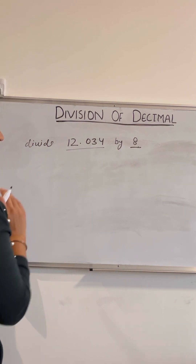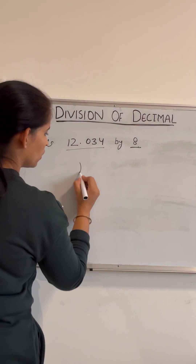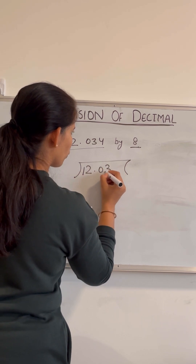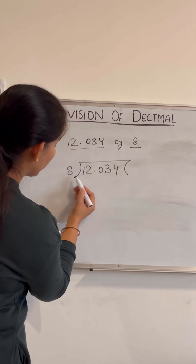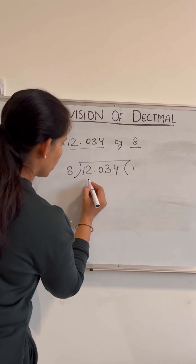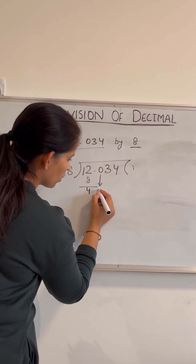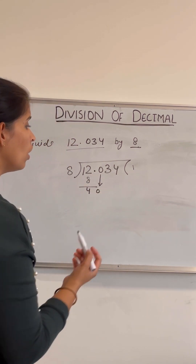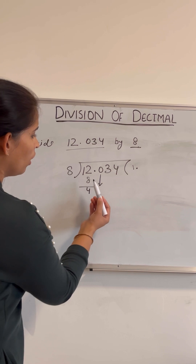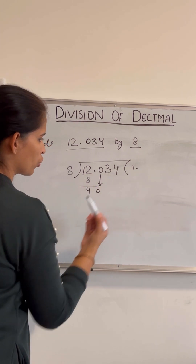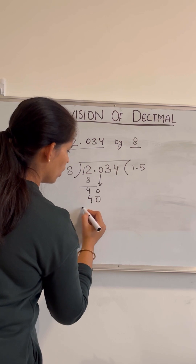We know that 12.034 is the dividend and 8 is the divisor. Starting the division: 1 is not divisible by 8, so we take 12. 8 ones are 8, so we get 1 with a remainder of 4. Now we drop the next digit. Since there is a decimal in between, we place the decimal point in our quotient — that is the second key point.